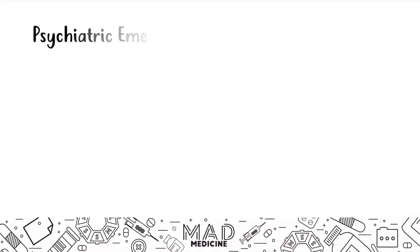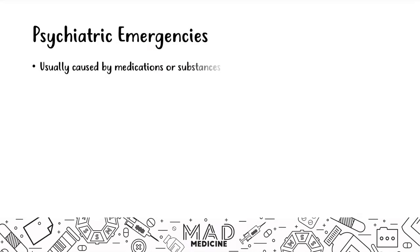Let's start talking about psychiatric emergencies. Most psychiatric emergencies are usually caused by medications and substances that patients are taking. Very rarely does it happen on its own. These must be treated as soon as possible — hence, they are called psychiatric emergencies.